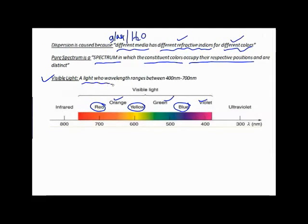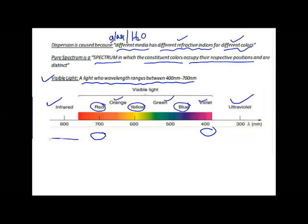Visible light has a wavelength ranging between 400 nanometers (violet) to 700 nanometers (red). Beyond 700 nanometers we get infrared, and below 400 nanometers we get ultraviolet. On the longer-wavelength side we also find radio waves and microwaves, while on the shorter-wavelength side there are X-rays and gamma rays, as well as cosmic rays.